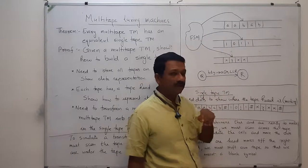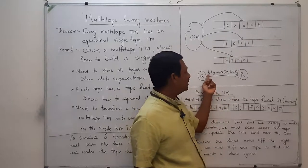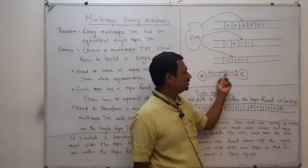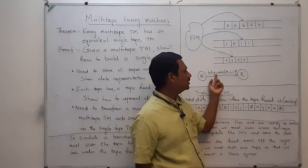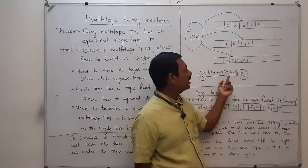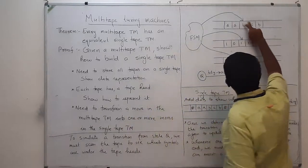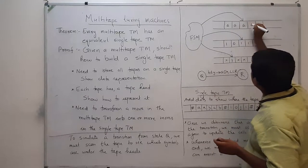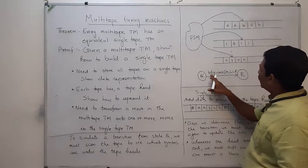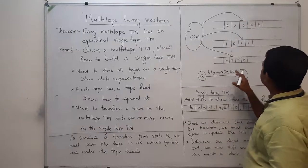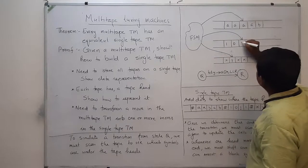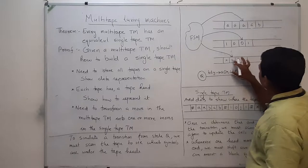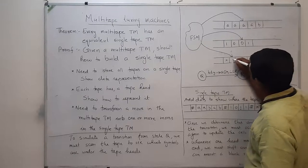What will happen? This B is replaced by A, 1 is replaced by 0, and Y is replaced by X. That means the first tape is replaced by A, the second tape cell is replaced by 0, and Y is replaced by X.